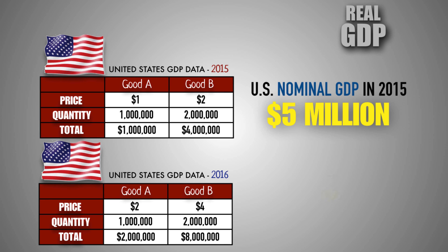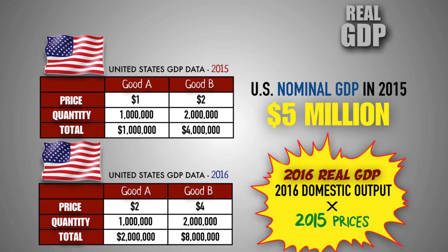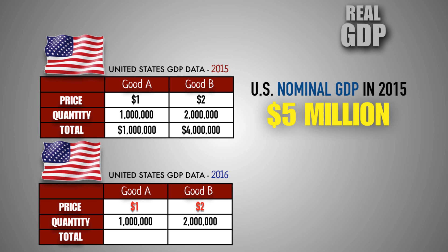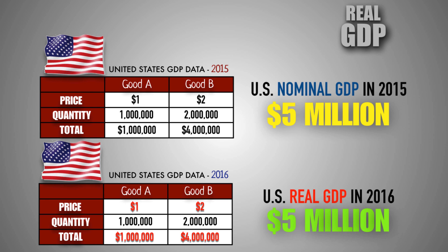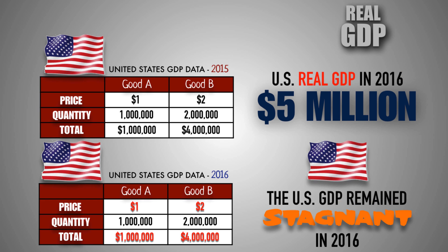Thus giving us the United States' real GDP for 2016. To find the 2016 real GDP for the United States, we must use the 2016 domestic output and multiply it by the 2015 prices. When adjusting for inflation, we can conclude that the United States' real GDP in 2016 was $5 million. As a result, we can conclude that the United States' gross domestic product in 2016 remains stagnant, meaning that it did not produce any more goods and services than it did in 2015, and the apparent growth in nominal GDP was due entirely to inflation.